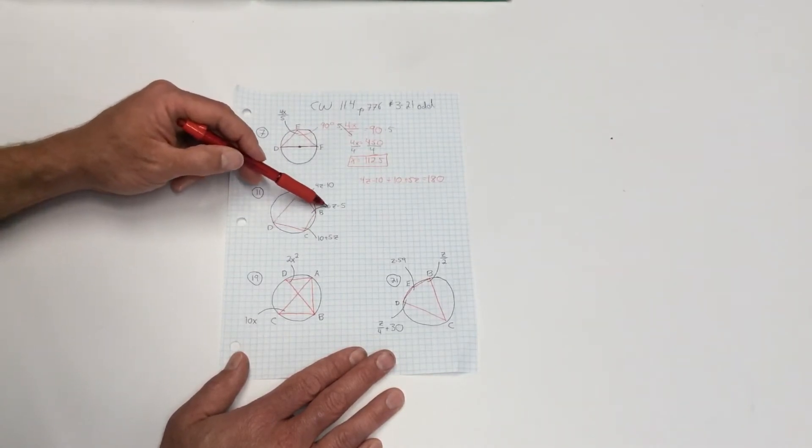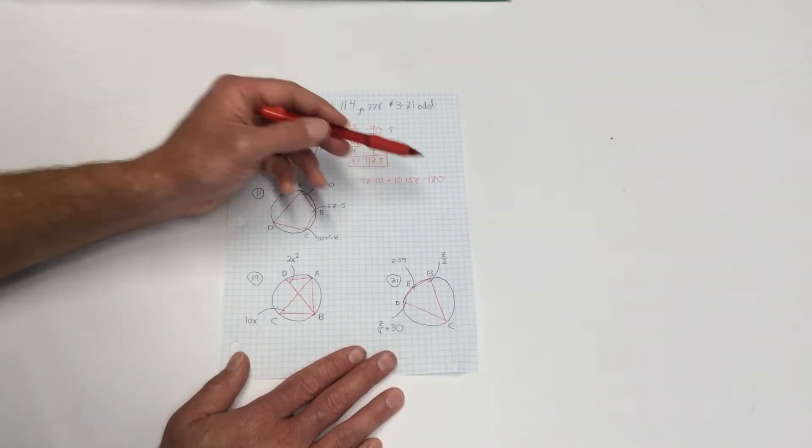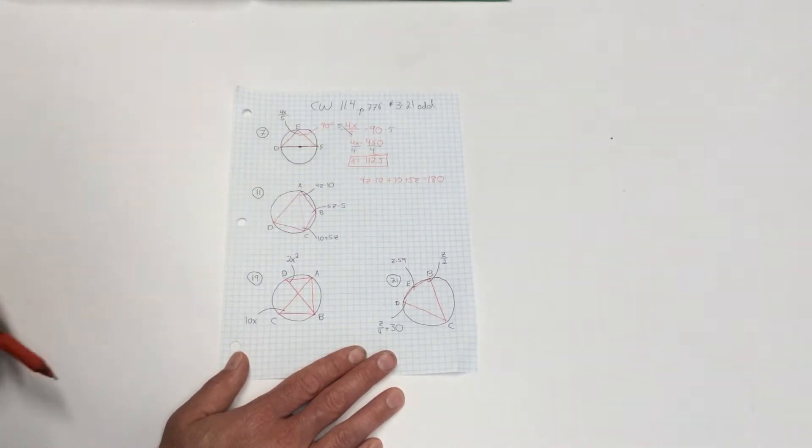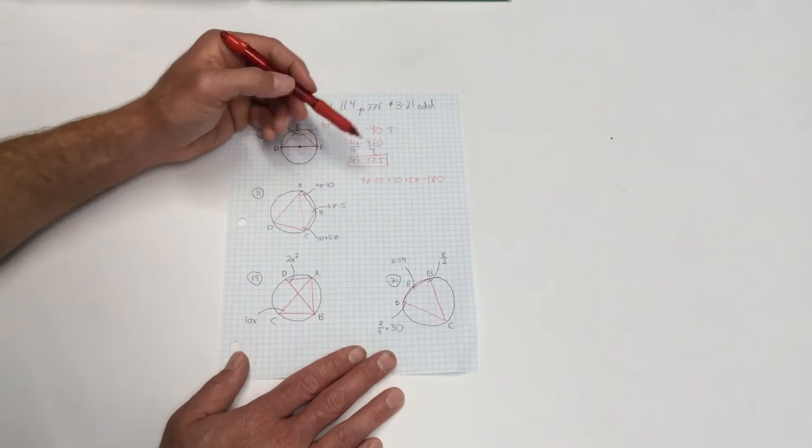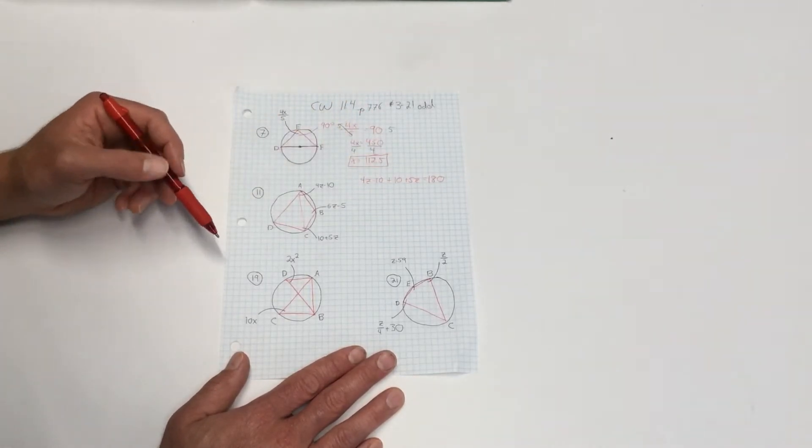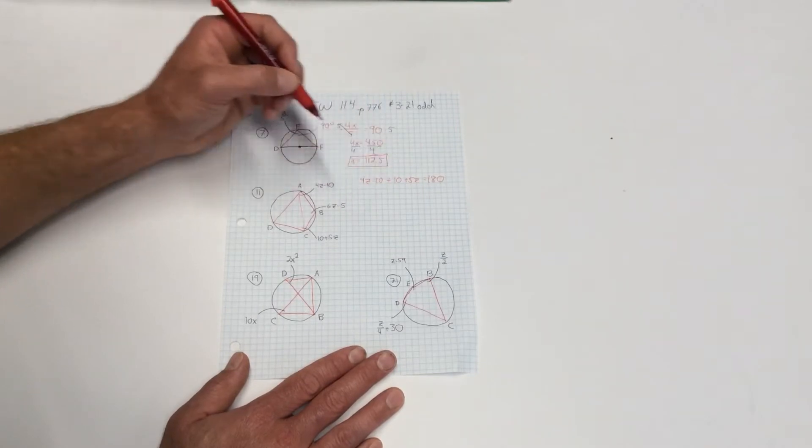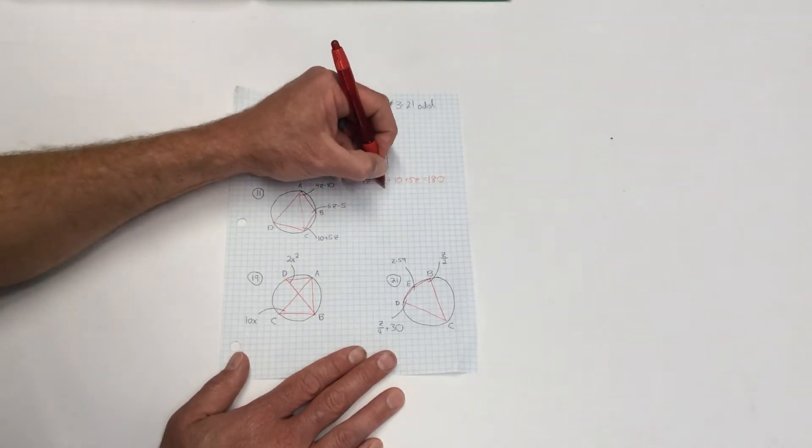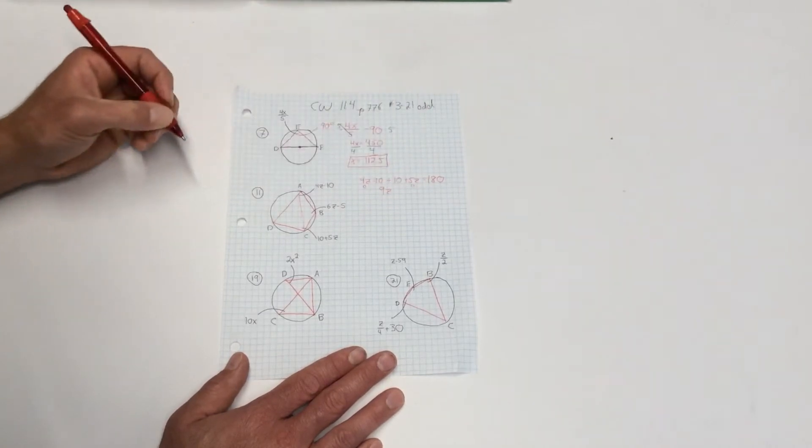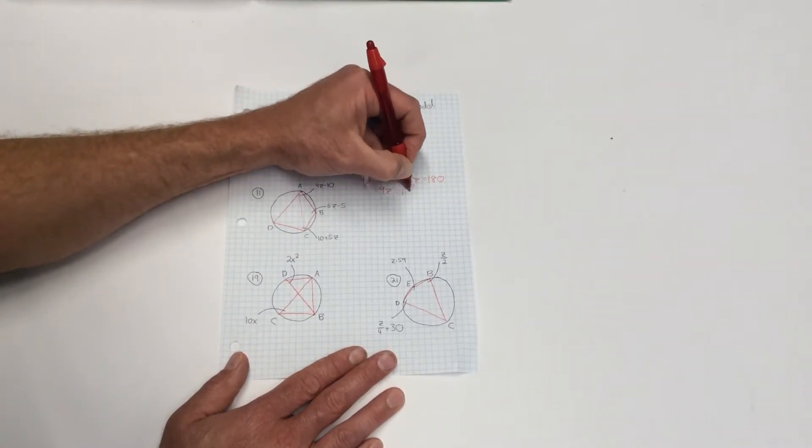So I can simply write that equation, and from here on out, it's algebra. 4Z minus 10 plus 10 plus 5Z equals 180. Again, notice I didn't use angle B because I didn't know its opposite angle. We'll be using that. Once we know Z, we can plug it in there, and we'll find angle B. But I'm not using it in this equation, because it's just the opposite angles that I'm concerned with. Okay, let's just keep going.